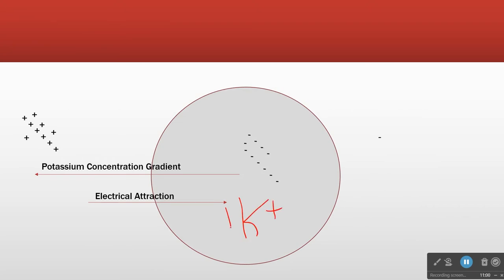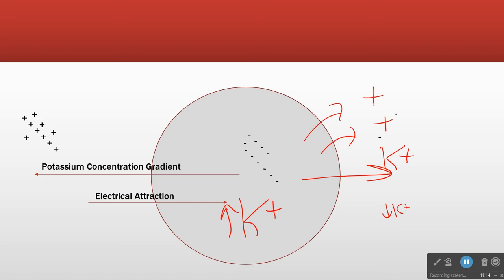At some point the inside of the cell is so negative that it's holding on to that positive charge and won't let it leave by diffusion. So here we have big potassium inside, little potassium outside — potassium tends to go out — but as it goes out, each time it leaves we get a positive outside and a relative negative on the inside, until potassium stops leaving because the negative is attracting it.